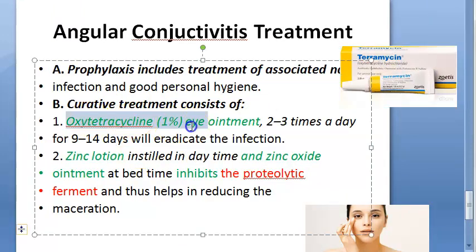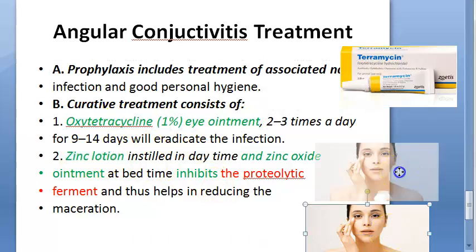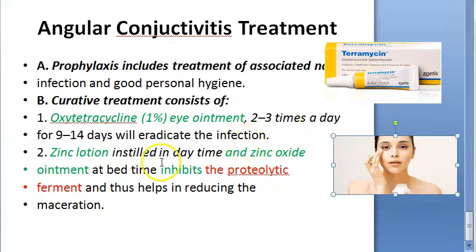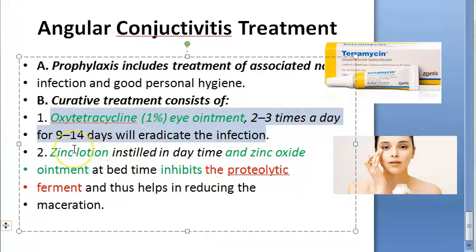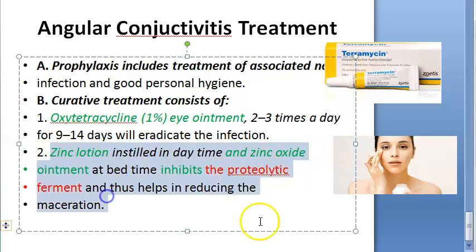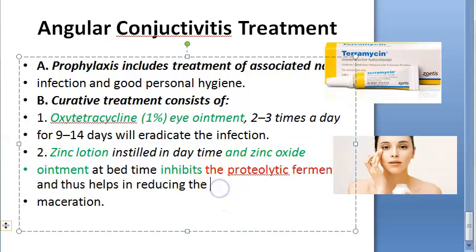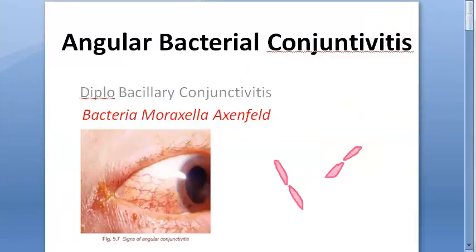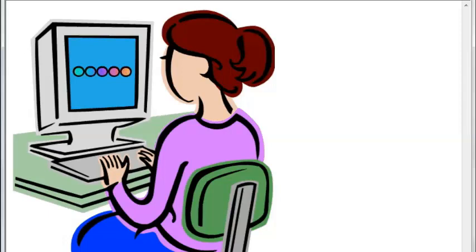The treatment regimen is oxytetracycline 1% eye ointment, zinc lotion applied in the daytime, and zinc oxide ointment at bedtime. The oxytetracycline targets the bacteria directly, while the zinc inhibits the proteolytic enzymes released by the bacteria, thereby reducing maceration. Oxytetracycline 1% ointment, zinc lotion in the morning, zinc oxide ointment at night.